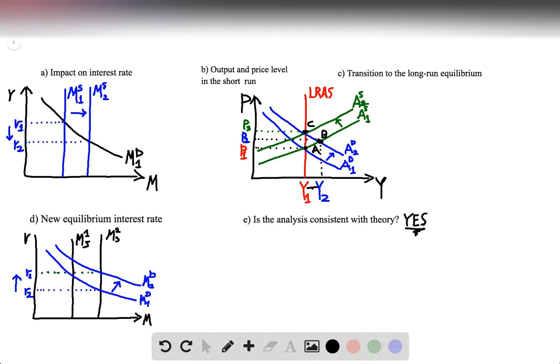So now, the economy is back at point C, which corresponds to the natural level of output Y1, and the price level will increase even more. We are at P3, which is way, way higher than when we started at P1.